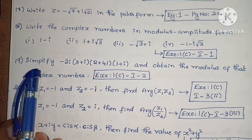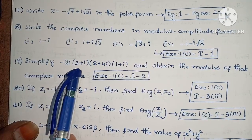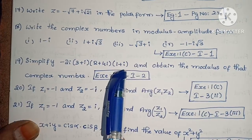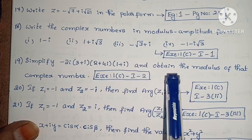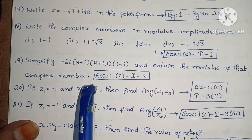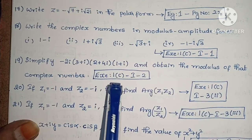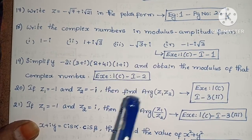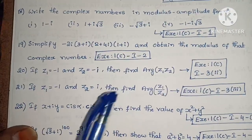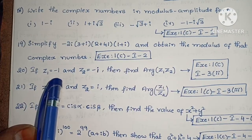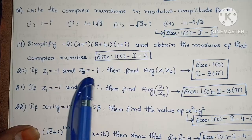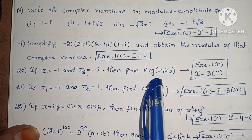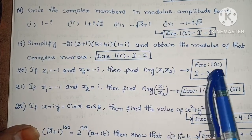Next, simplify (-2i)(3 + i)(2 + 4i)(1 + i) and obtain the modulus of that complex number. Exercise 1c, first roman, second one. Next, if z1 equals minus 1 and z2 equals minus i, then find arg(z1 · z2).